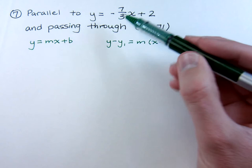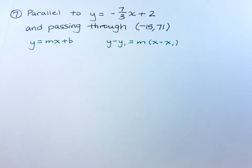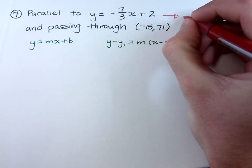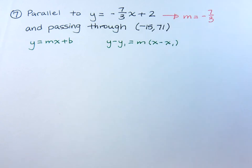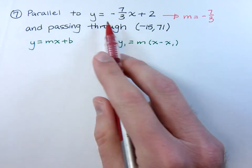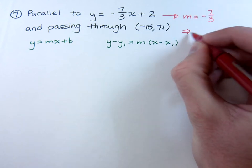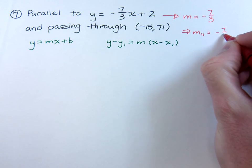Now, since we're going to be parallel to y equals negative 7 thirds x plus 2, we can get from this guy that our slope is negative 7 thirds. Well, if the slope of this line is negative 7 thirds and we want to be parallel to it, that means that my parallel slope is also going to be negative 7 thirds.